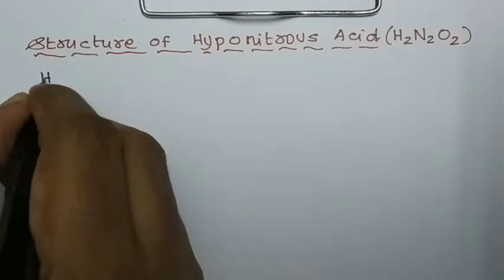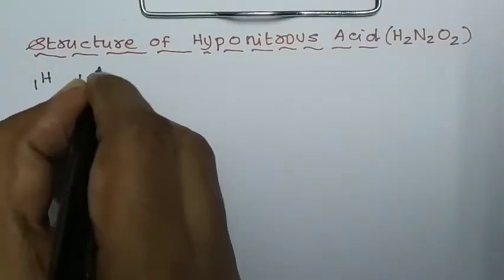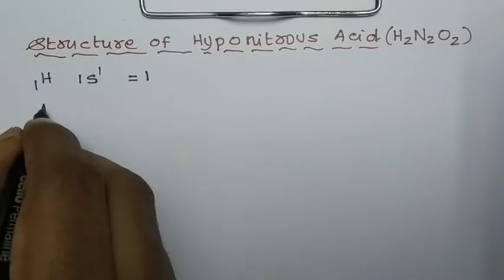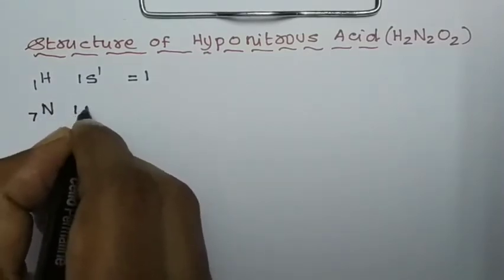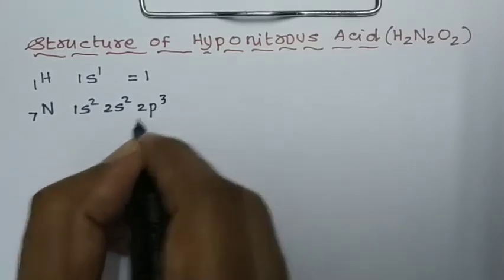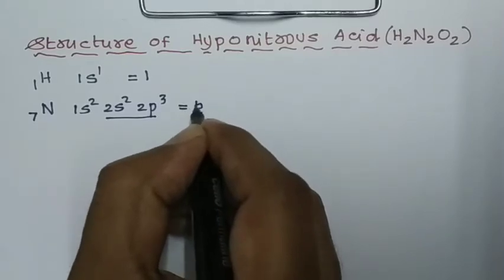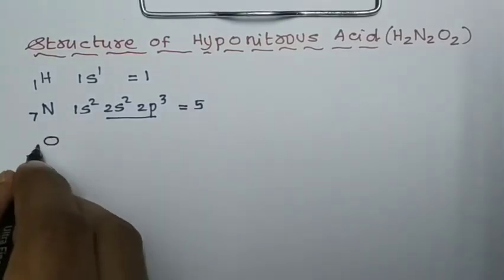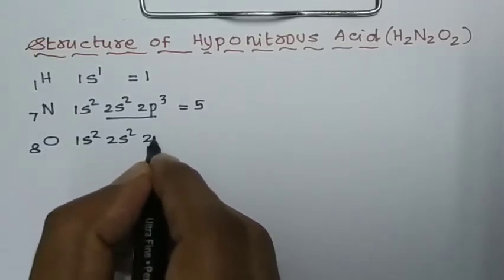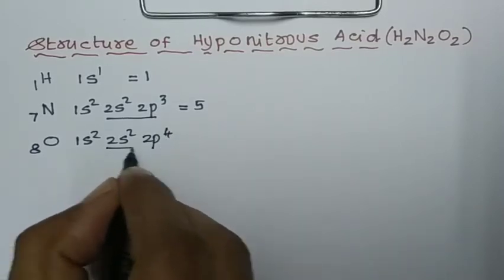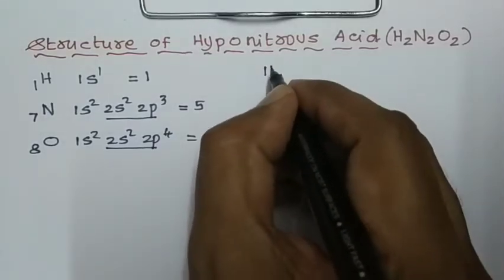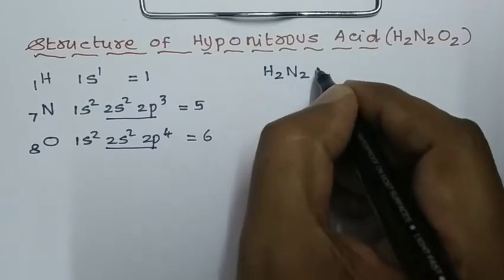Hydrogen has atomic number 1, electronic configuration 1S1, so the total number of valence electrons in hydrogen equals 1. Nitrogen has atomic number 7, electronic configuration 1S2, 2S2, 2P3, giving 5 valence electrons. Oxygen has atomic number 8, electronic configuration 1S2, 2S2, 2P4, giving 6 valence electrons.